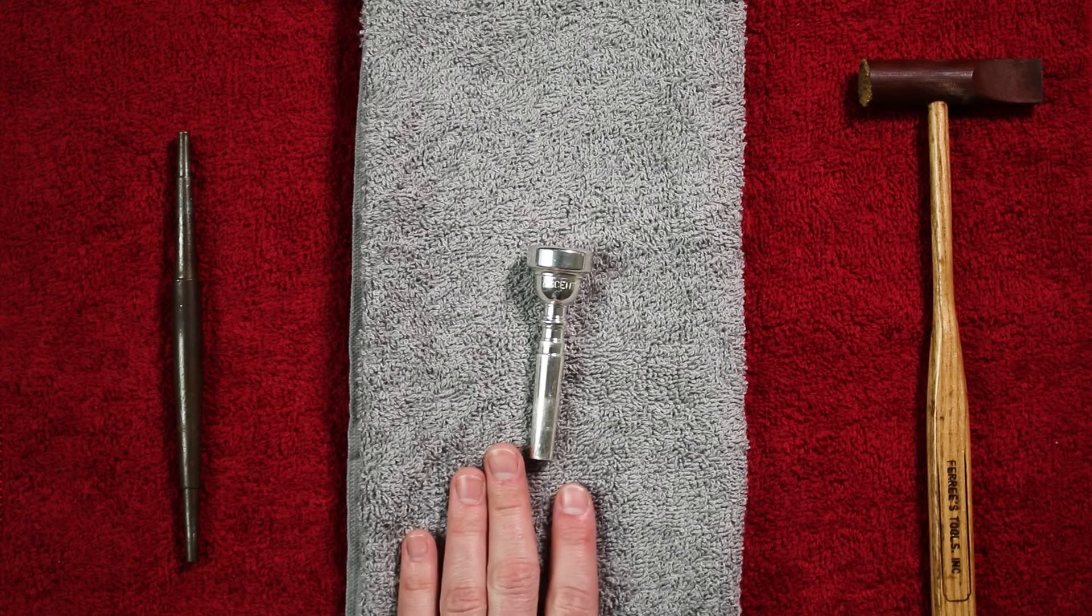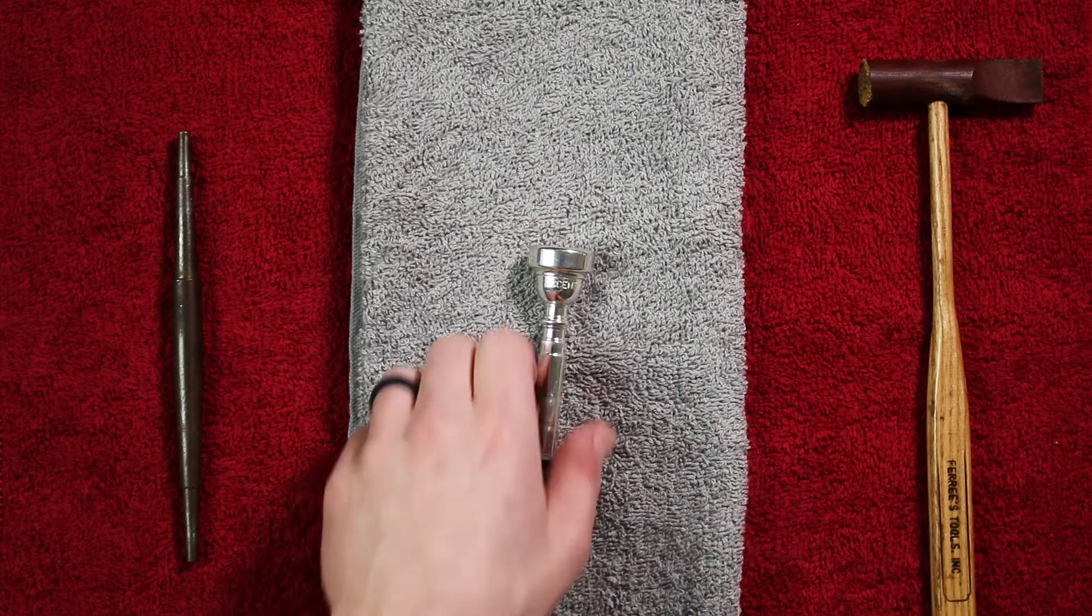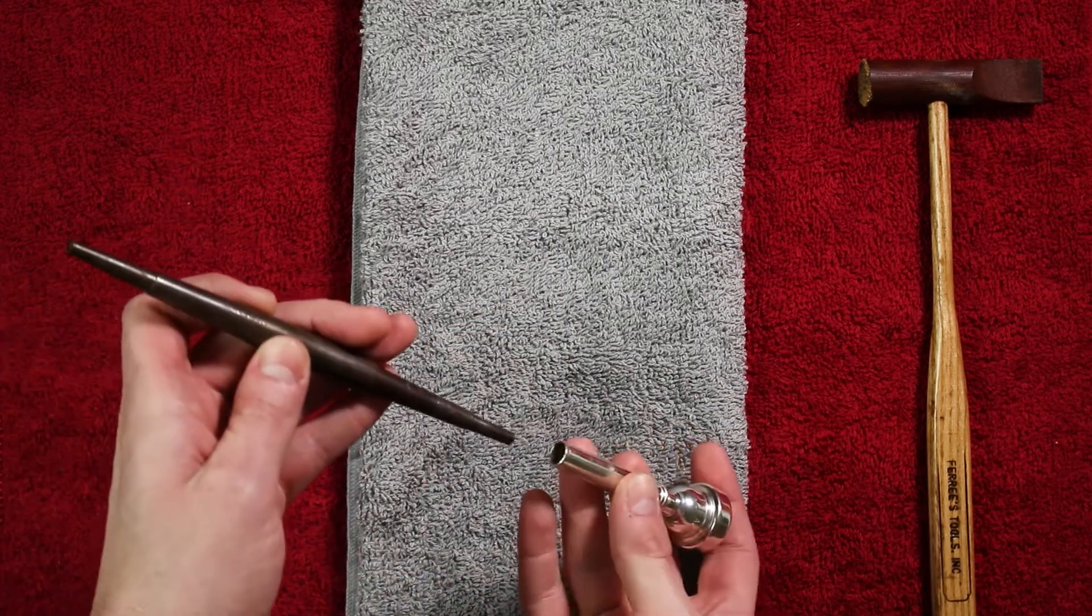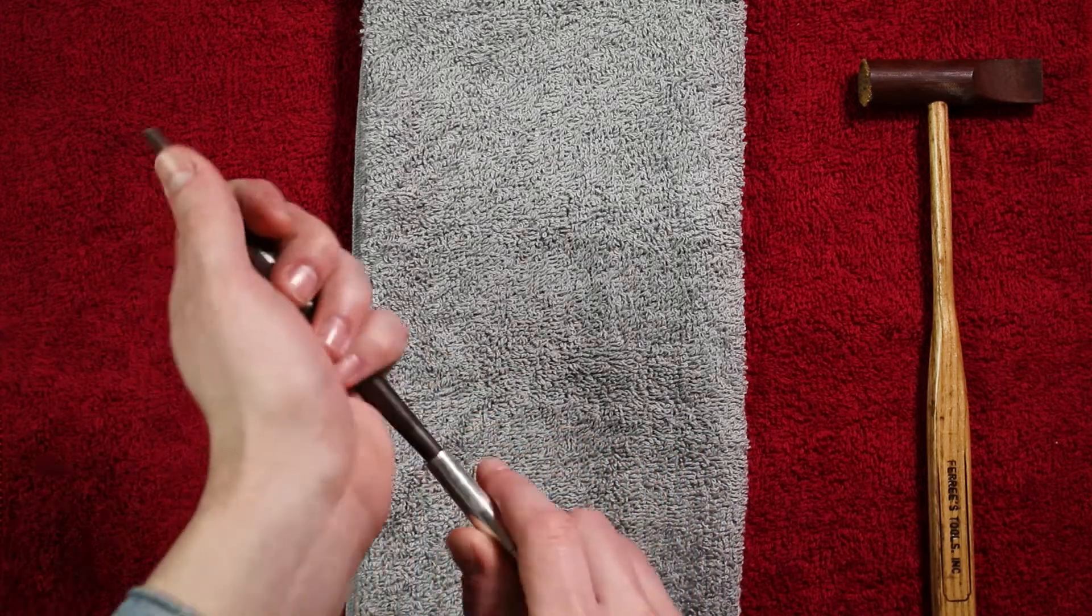Start by laying down your soft cloth to avoid making any dents on the rim of your mouthpiece. Then put the mouthpiece shank over the truing tool and hand-tighten it into place.